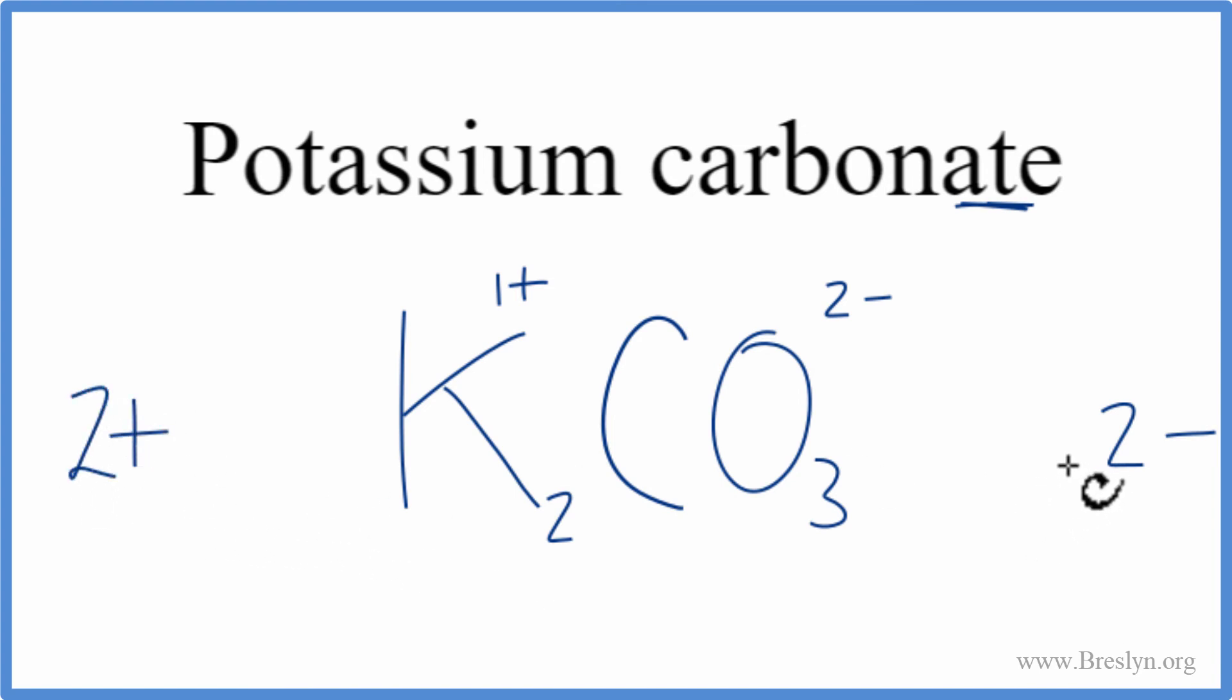2 plus, 2 minus, they cancel out. Net charge is 0. This is the correct formula for potassium carbonate.